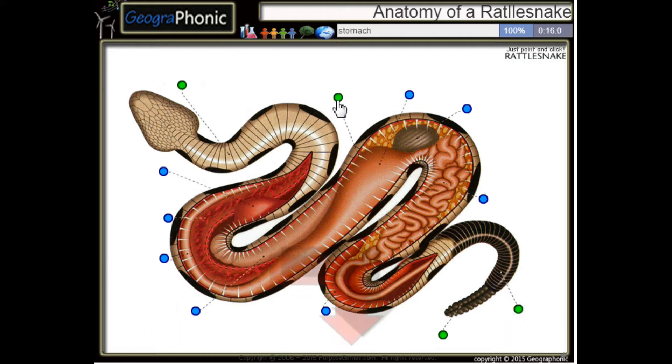This is a rib, a single rib. This is the stomach of the rattlesnake. This is its liver. Here we see the heart.